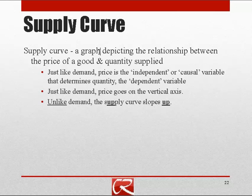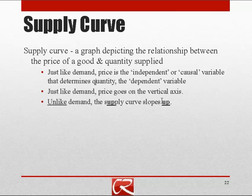The same sorts of things we talked about with demand apply with supply. We usually think of price as the independent variable that determines the amount that sellers are willing to sell. However, because of historical tradition — just like with demand — price goes on the vertical axis. Notice that whereas the law of demand indicated that the demand curve should slope down, because price and the amount that people want to buy are inversely related...